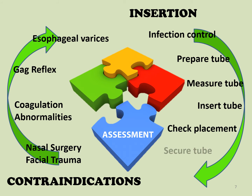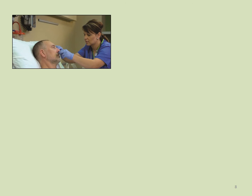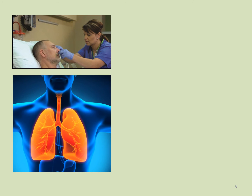If no contraindications are present, explain the procedure and obtain the patient's consent, prepare the tube, measure the tube, insert the tube, secure the tube, and document. To avoid tissue trauma during insertion, the tube must not be forced. If resistance is felt, the tube should be withdrawn, re-lubricated, and reinserted through the other nostril.